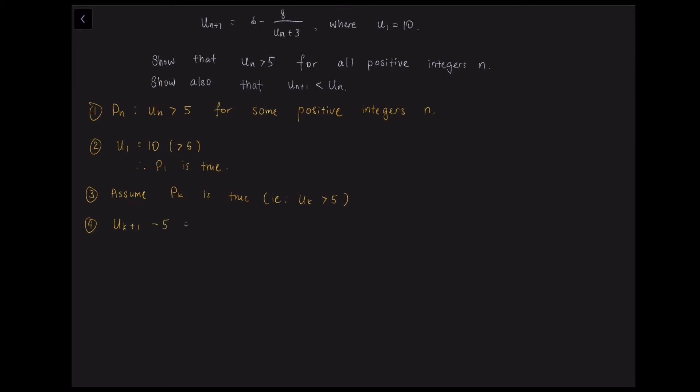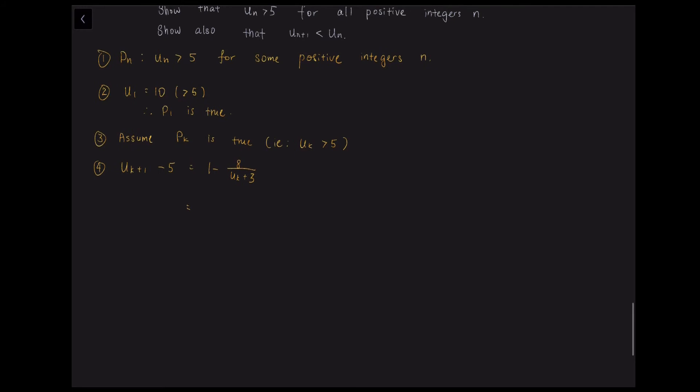We subtract 5 to see if it is larger than 0. So uk plus 1, since it must be bigger than 5 as well. So uk plus 1 minus 5. And we know what uk plus 1 is. So it equals to uk minus 8 over uk plus 3 minus 5. And then which is equal to uk minus 5 over uk plus 3.